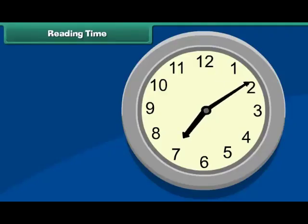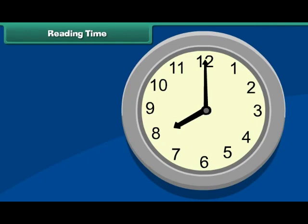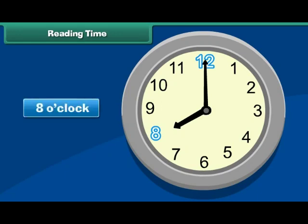Reading time. Look at this clock. Note the positions of the minute and hour hands on its face. The minute hand is pointing to 12 and the hour hand is pointing to 8. It means the time is 8 o'clock.